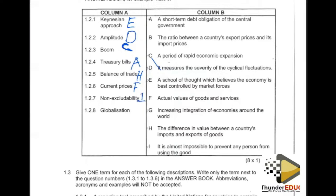Our appropriate answer for non-excludability is I: it is almost impossible to prohibit any person from using the good.